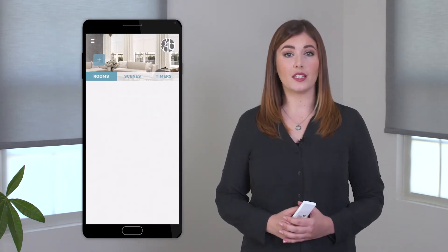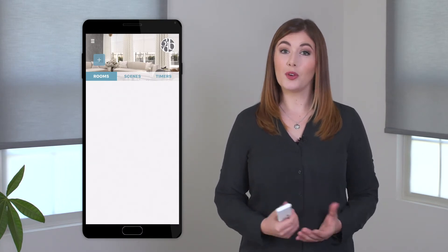Start by opening the 3 Day Blinds app. When adding your motorized shades to the app, it will ask you to select a room. The app comes with a list of preset rooms, such as dining room or living room, or you can create a custom room.